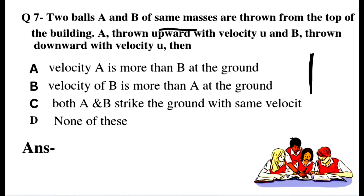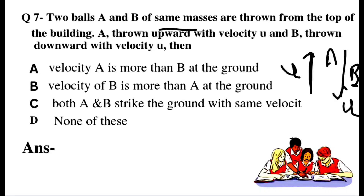Ball A is thrown upward and ball B is thrown downward, both with the same velocity U. When A goes up and comes back to the level of the building top, it has velocity U downward — the same as B's initial velocity. So both A and B strike the ground with the same velocity. Option C is the right answer.